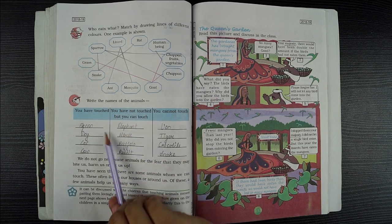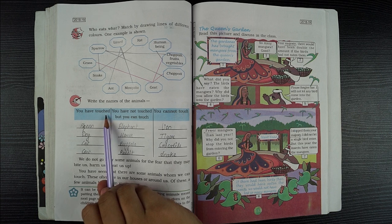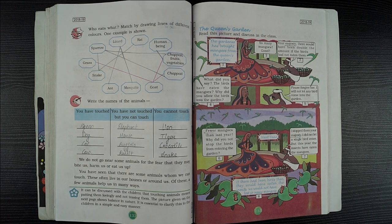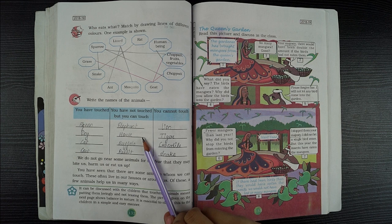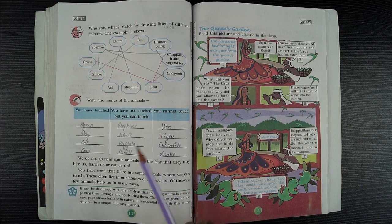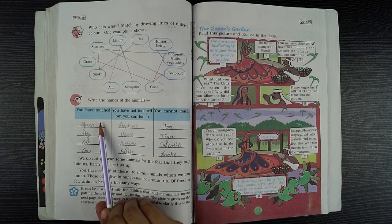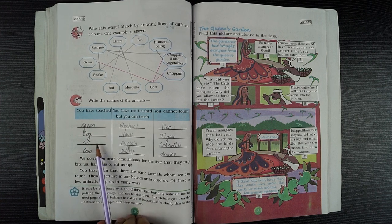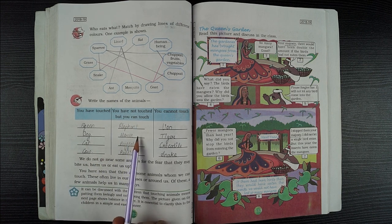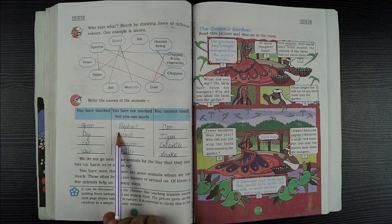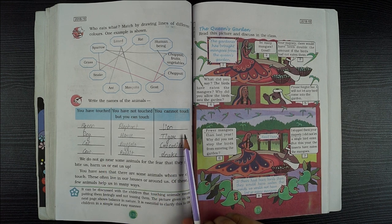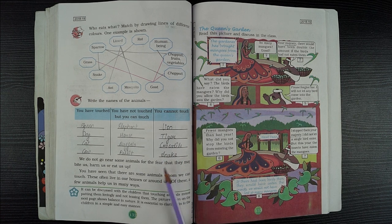Write the names of the animals you have touched, you have not touched but you can touch, you cannot touch. Animals I have touched: pigeon, dog, cat, cow. Animals I have not touched but can touch: elephant, horse, buffalo, rabbit. Animals I cannot touch: lion, tiger, crocodile, snake.